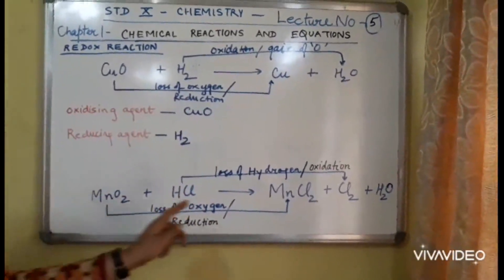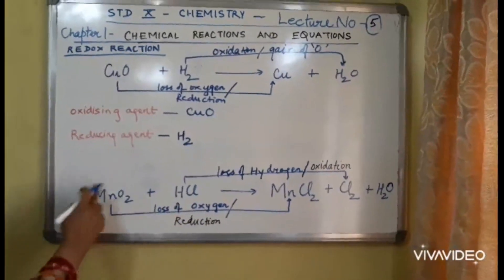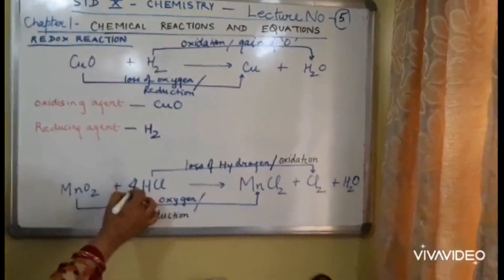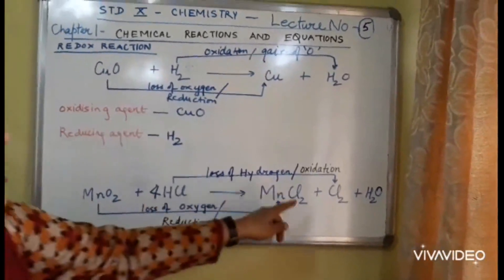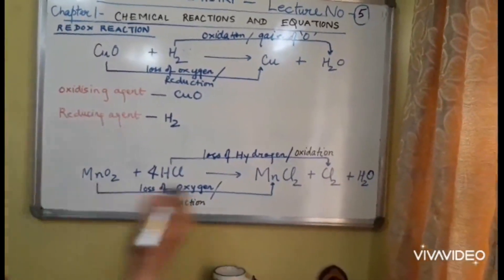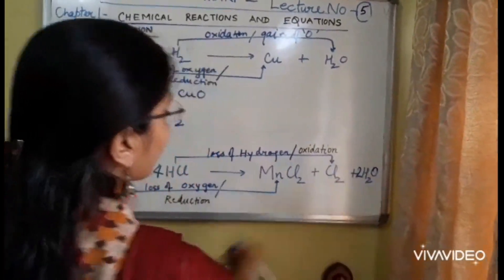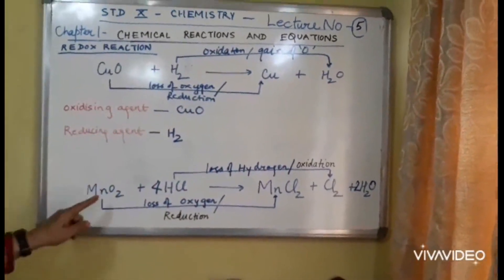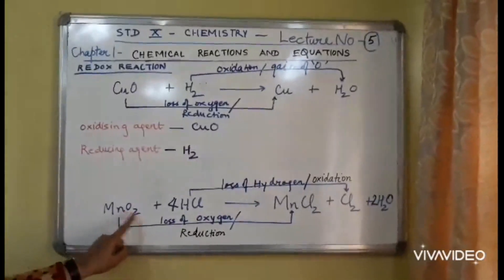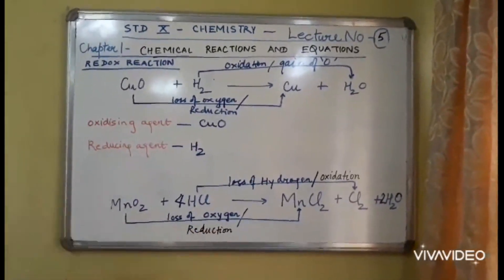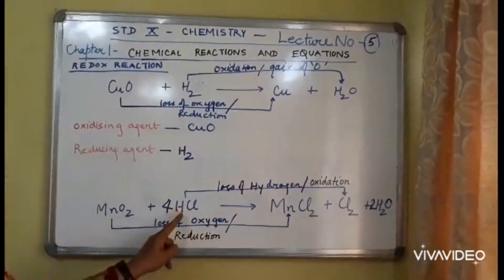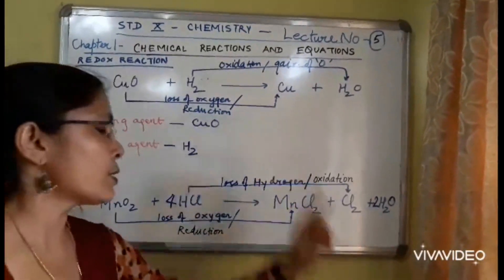One more example is there in NCERT. See here, manganese dioxide, when it reacts with HCl, balance it. It changes into MnCl2, Cl2 and H2O. If you balance it, you have to add 2 also over here. Now MnO2 is changing to MnCl2. O is lost, loss of oxygen, reduction. HCl is changing into chlorine gas, loss of hydrogen, so oxidation.